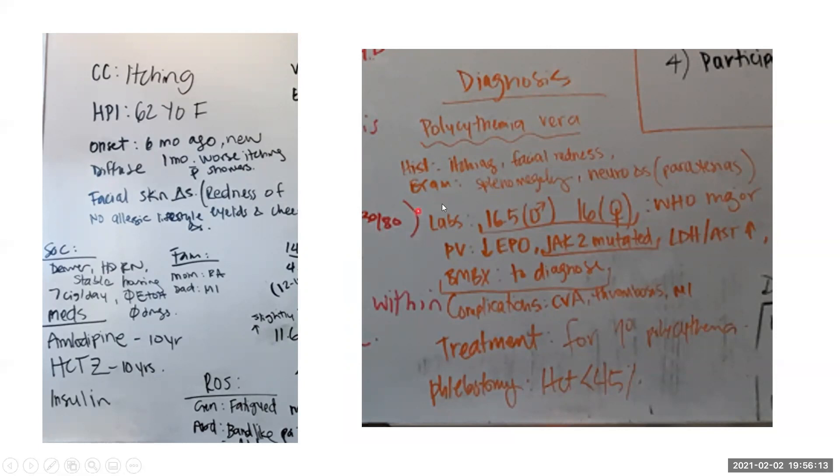On labs, typical cutoffs are 16.5 for hemoglobin for men and 16 for women. For additional labs, for polycythemia vera particularly, the EPO level should be low, and a JAK2 mutation can be detected. Ultimately, bone marrow biopsy can also be utilized to diagnose this condition.